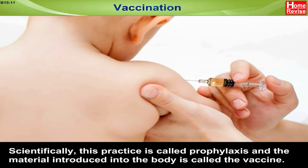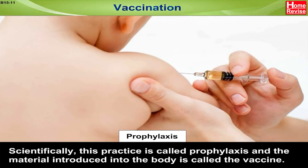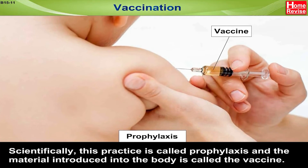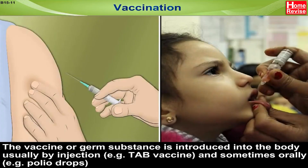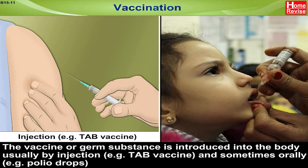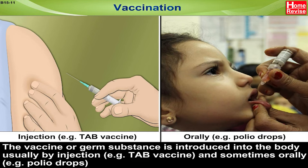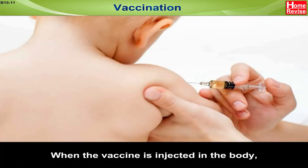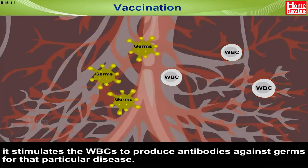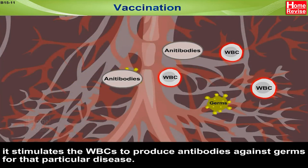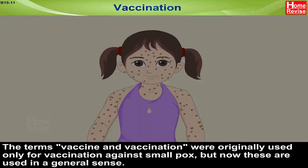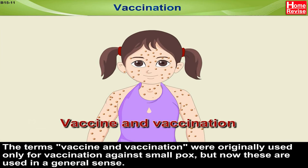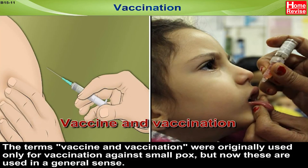For developing resistance to particular diseases, scientifically this practice is called prophylaxis, and the material introduced into the body is called the vaccine. The vaccine or germ substance is introduced into the body usually by injection — for example, the TAB vaccine — and sometimes orally — for example, polio drops. When the vaccine is injected into the body, it stimulates the white blood cells to produce antibodies against germs for that particular disease. The terms vaccine and vaccination were originally used only for vaccination against smallpox, but now these are used in a general sense.